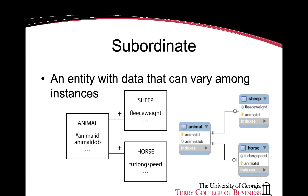Subordinate entities are entities that have data that can vary amongst instances. In this example, animals can either be sheep or horses, with sheep having different attributes like fleece weight and horses having furlong speed. They are both instances of entities, but the data amongst these entities can vary — for instance, horses don't have a fleece weight and sheep don't have furlong speed.